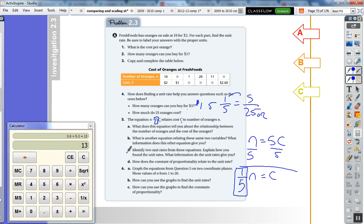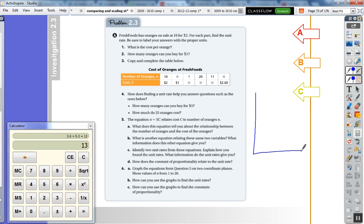Now graph the equations from question 5 on two coordinate planes. Show values of n from 1 to 20. On your homework from last night, I noticed a large number of people did not label the axes. Number of oranges, this is cost in dollars. I'm obviously committing the cardinal sin of not having graph paper.